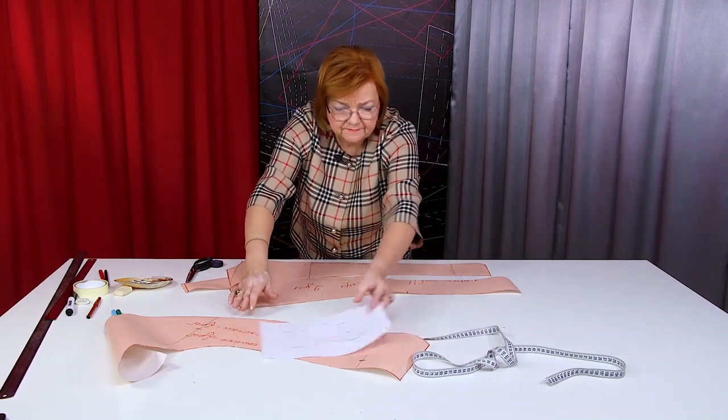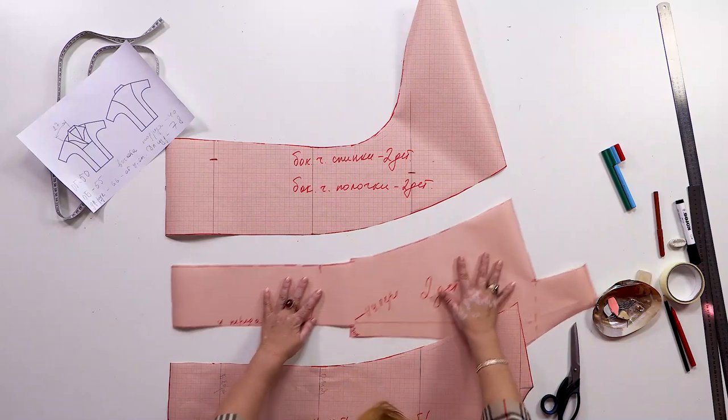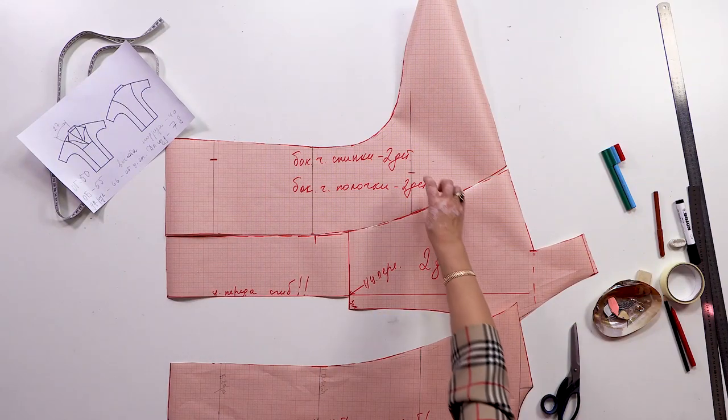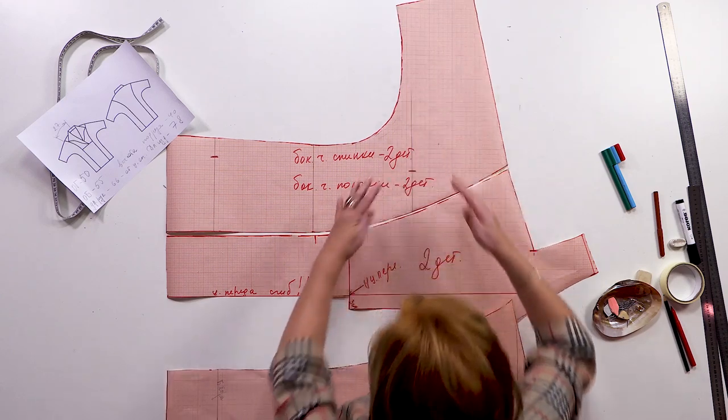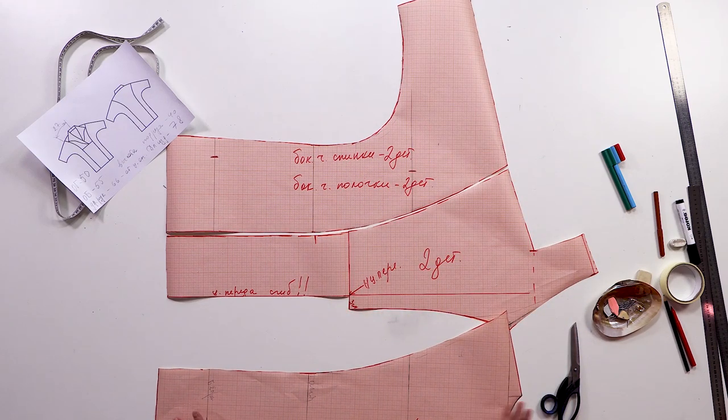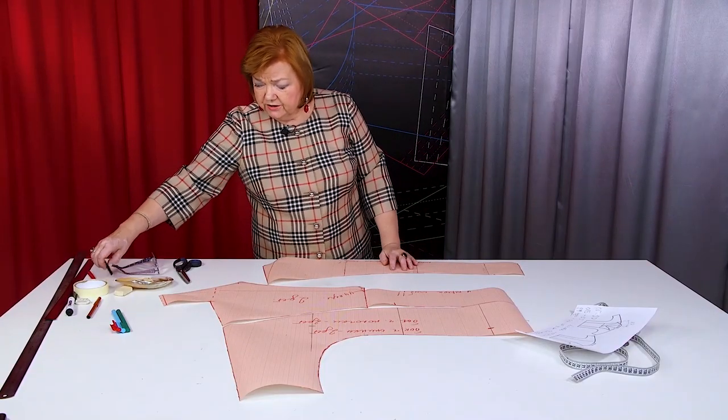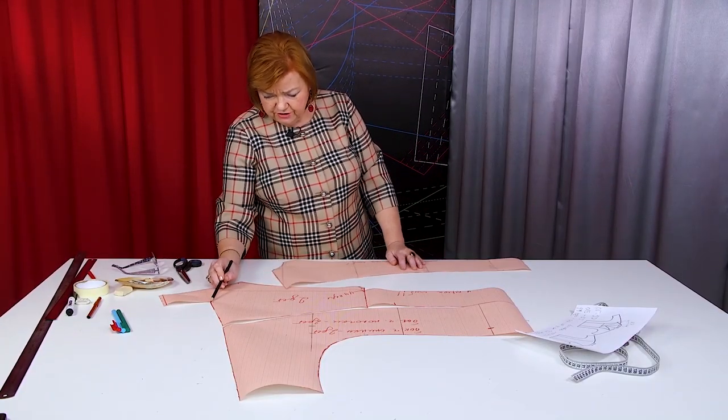This is the back. The side details for the front and the back. I remind you that they are the same in the back and the front. This is very important. The pattern is ready. This is the shoulder top.